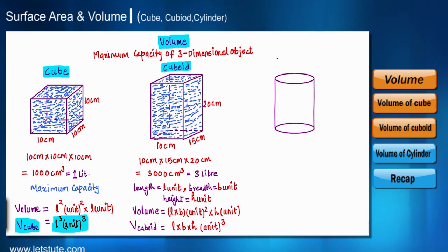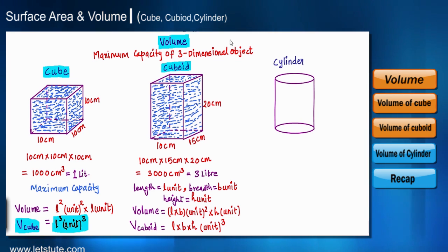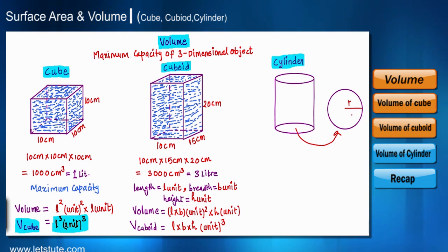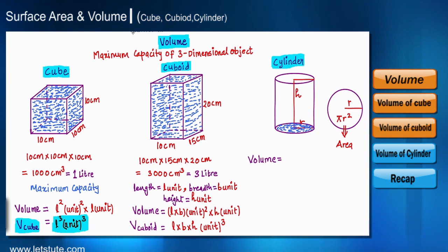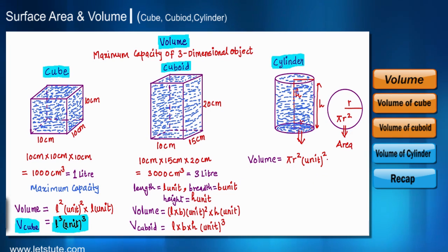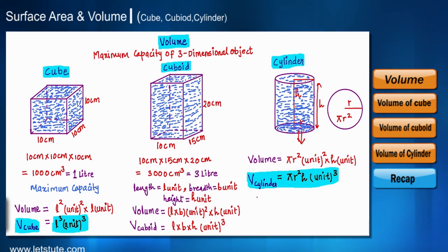We can notice that for uniform shapes, multiplying the area of base by height gives the volume. Now we have one more three-dimensional shape: a right circular cylinder. The base is circular, and the area of a circle with radius r is pi r squared. So multiplying the area of the circle by the height gives the volume of a right circular cylinder. Taking radius r unit and height h unit, the volume of a cylinder is pi r squared h unit cubed.